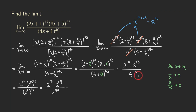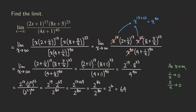Combining the two factors in the numerator by adding their exponents: 2^17 times 2^69 = 2^(17+69) = 2^86. The denominator is 2^80. To simplify, we take 86 minus 80, giving us 2^6. Computing 2^6 = 64, so the limit equals 64.